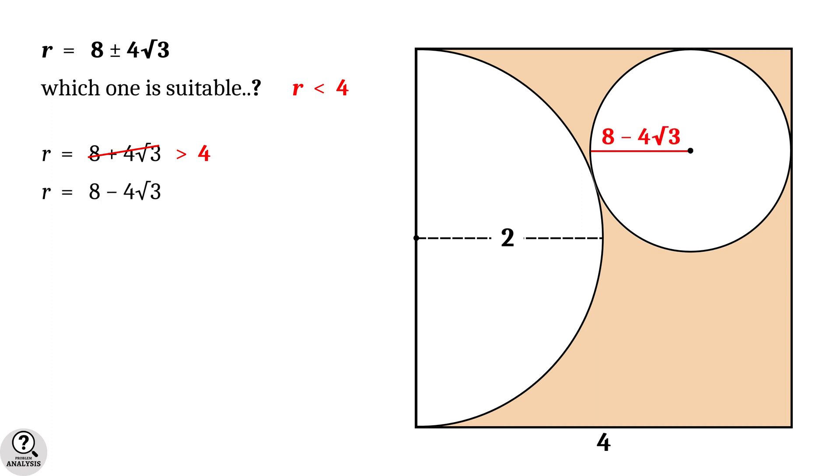In the diagram of our problem, the radius of the circle is equal to 8 - 4√3. That is, equal to 4(2 - √3) units. This value is approximately equal to 1.0718 units. And that is the solution we are looking for.